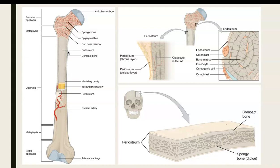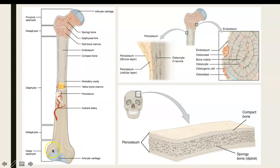I want you to notice a couple of things. This is the proximal end of the bone — it's the part of the humerus that articulates in the shoulder. And then down here, we have the distal end of the bone, remembering that proximal means closer to the midline, and distal means farther away. The distal part here articulates with the radius and the ulna, and this is, of course, part of the elbow.